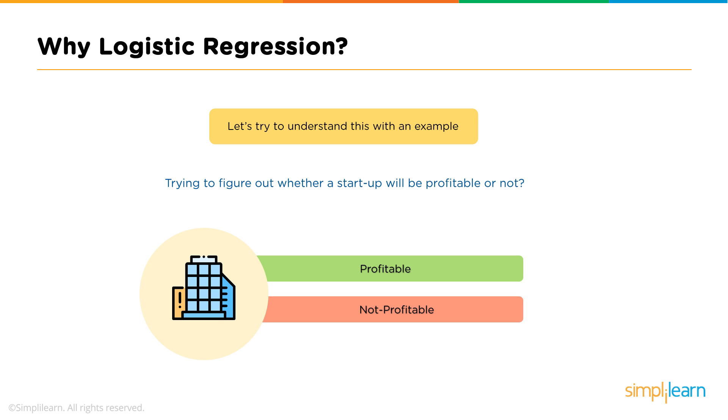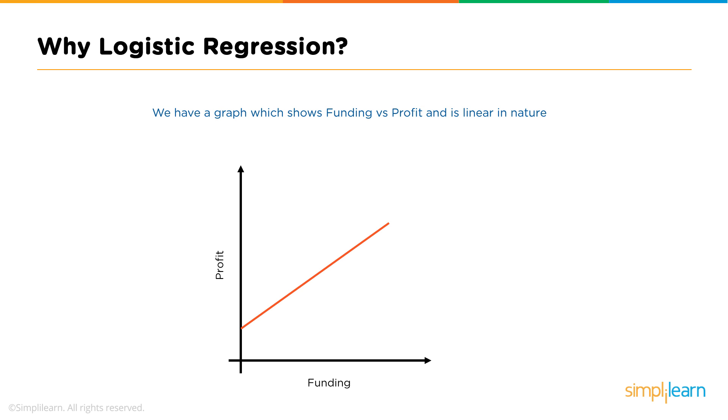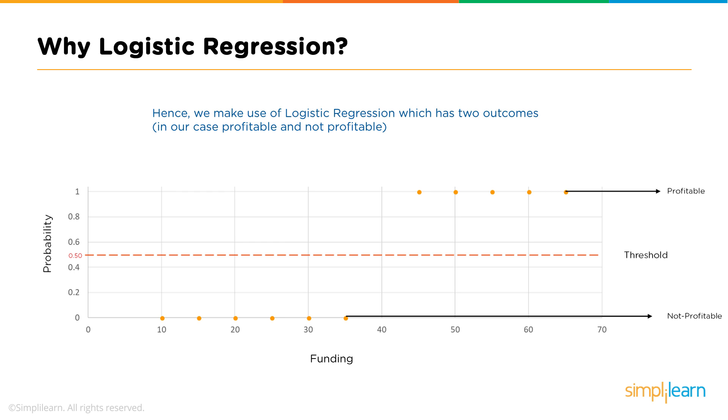So let's try to understand this with an example. Let's say we have a startup company, and we are trying to figure out whether the startup will be profitable or not. That's binary with two possible outcomes, profitable or not profitable. And let's use initial funding to be the independent variable. Here we have a graph that shows funding versus profit, and it appears linear. Once again, our intuition tells us that the more funding a startup has, the more profitable it will be. But of course, data science doesn't depend on intuition, it depends on data. But this graph does not tell whether the startup will be profitable, yes or no. It only states that with an increase in funding, the profit also increases. That's not binary. If we wanted to predict how much profit, then linear regression would be useful. But that's not what we are being asked.